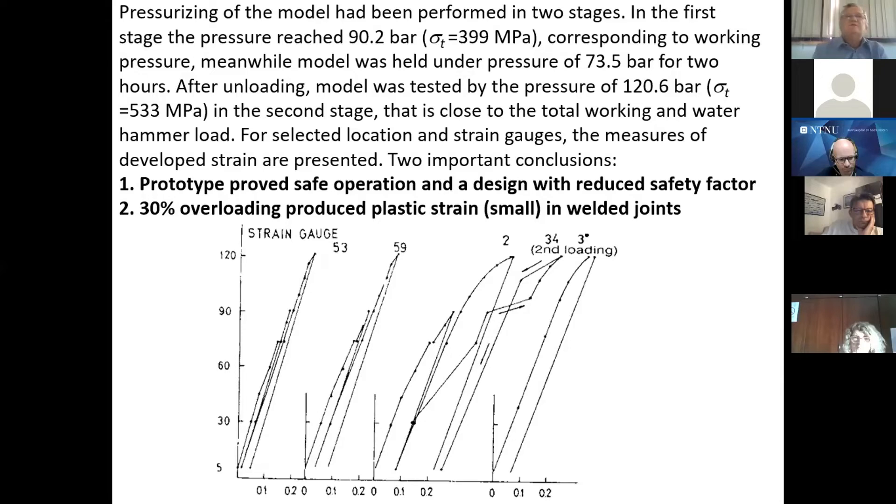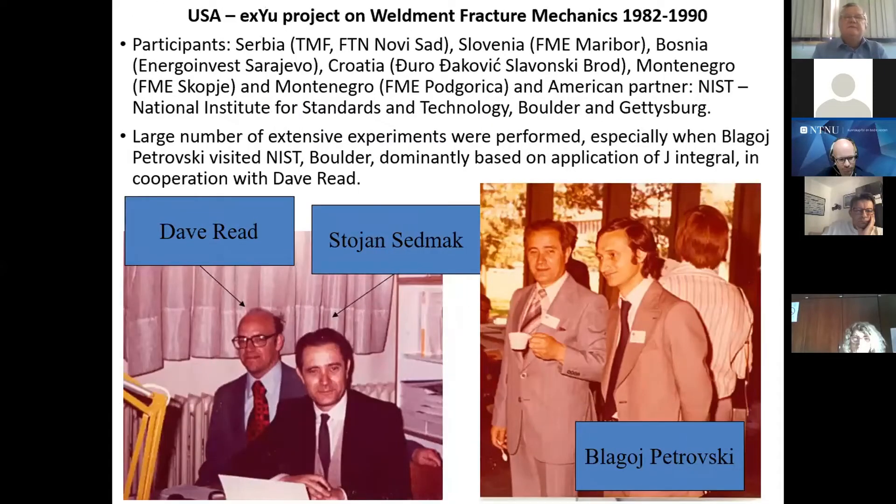So this was the first one. Second one, USA-XU project. You can see three key researchers, three key persons here. There are photos that have already shown Dave Reed and Stojan Sedmak, but also Stojan Sedmak and Blagoje Petrovski. I'm not quite sure about the third one, which is backwards, but it could have been me. Maybe Blagoje can say he is right here with us. Mohan Rathwani?